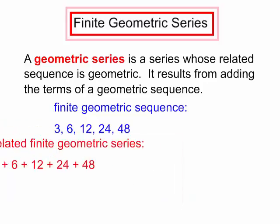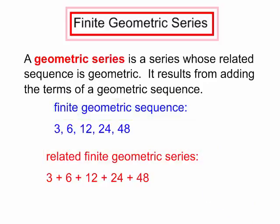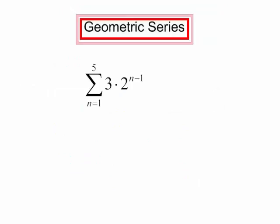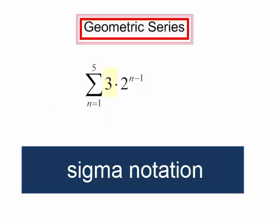Now let's talk about the geometric series. This is the related finite geometric series — it's simply the same numbers but we are going to add them. The sum of this geometric series is 93. I can also express geometric series using sigma notation. This is telling me to add terms 1 through 5 of this series. I see that my first term of the series is 3.